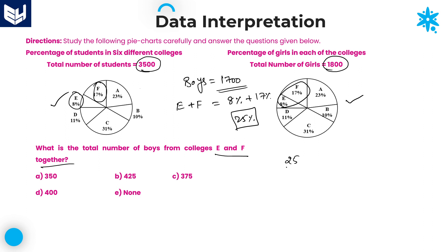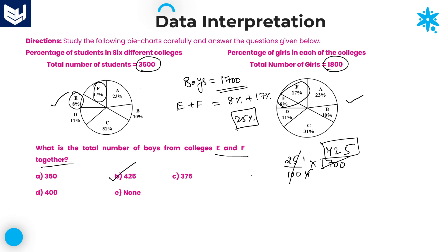25% of 1,700 = 1/4 of 1,700. Cancelling with 4: 1,700 ÷ 4 = 425. Total number of boys from colleges E and F together is 425. That is option B.